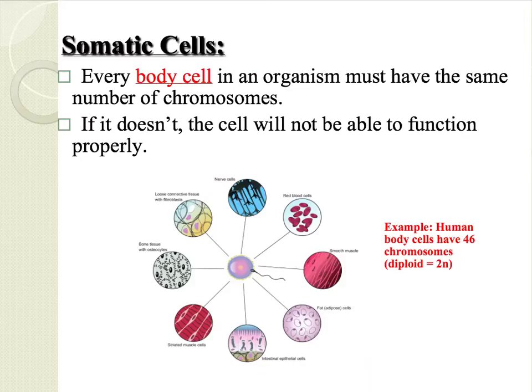All of your body cells contain the same number of chromosomes. If this wasn't so, the cell will not be able to function properly. Body cells are also known as somatic cells, and in humans somatic cells have 46 chromosomes.